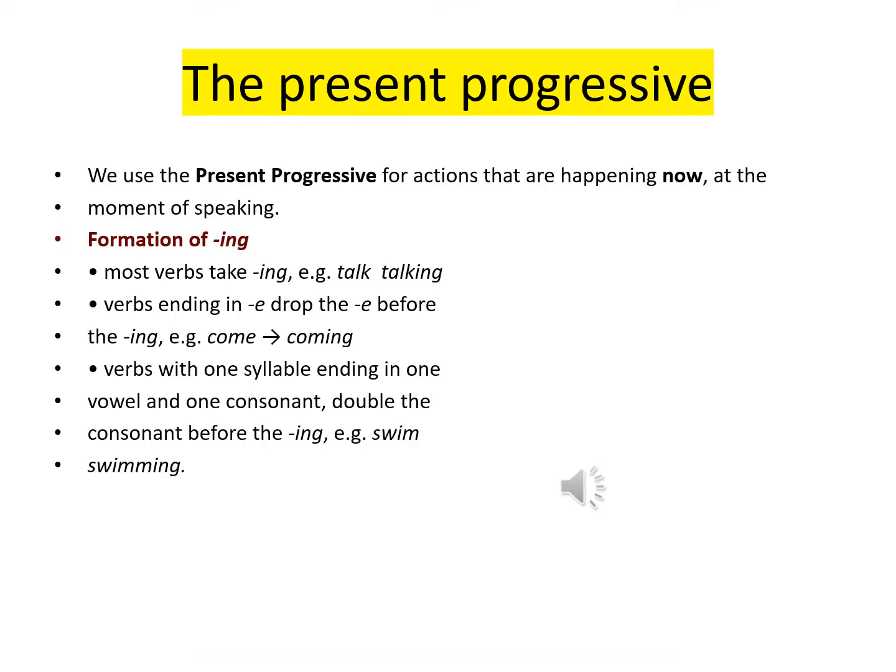The present progressive. We use the present progressive for actions that are happening now, at the moment of speaking. Formation of ING: most verbs simply take ING — for example, talk → talking. Verbs ending in E drop the E before adding ING — for example, come → coming. As you notice, we drop the E before adding ING.